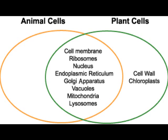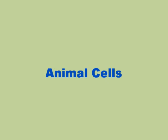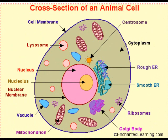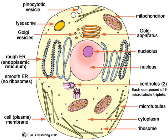Plant cells, however, have a cell wall and chloroplasts. This is an animal cell. The cell membrane is semipermeable to allow some substances to pass through.